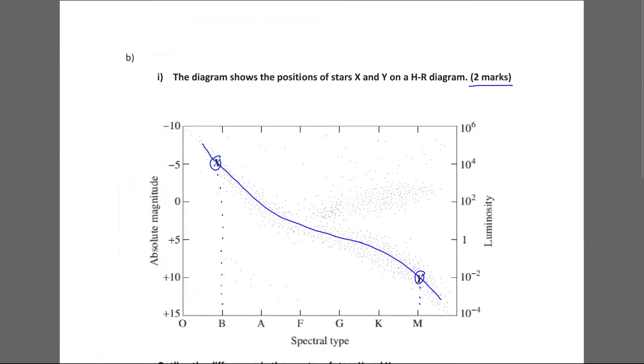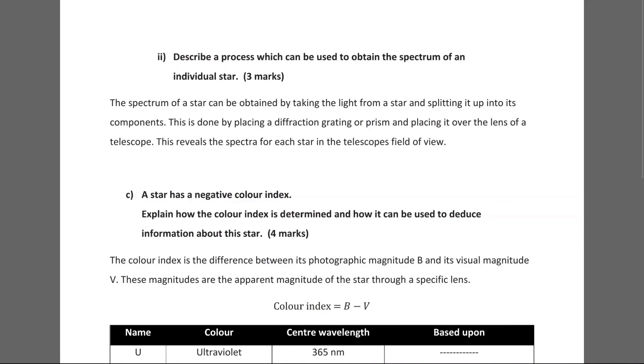Okay. So that's question B, part 1. Part 2. Describe a process which can be used to obtain the spectrum of an individual star.